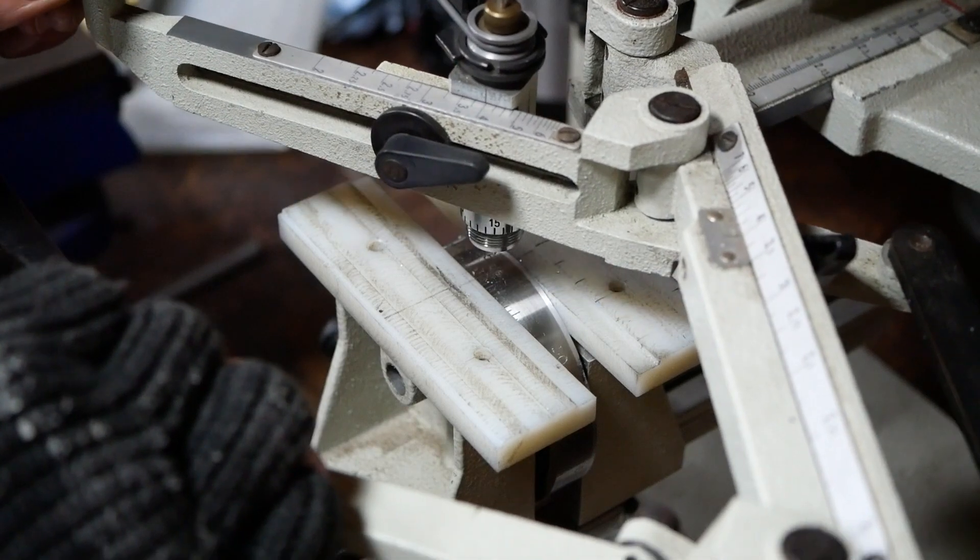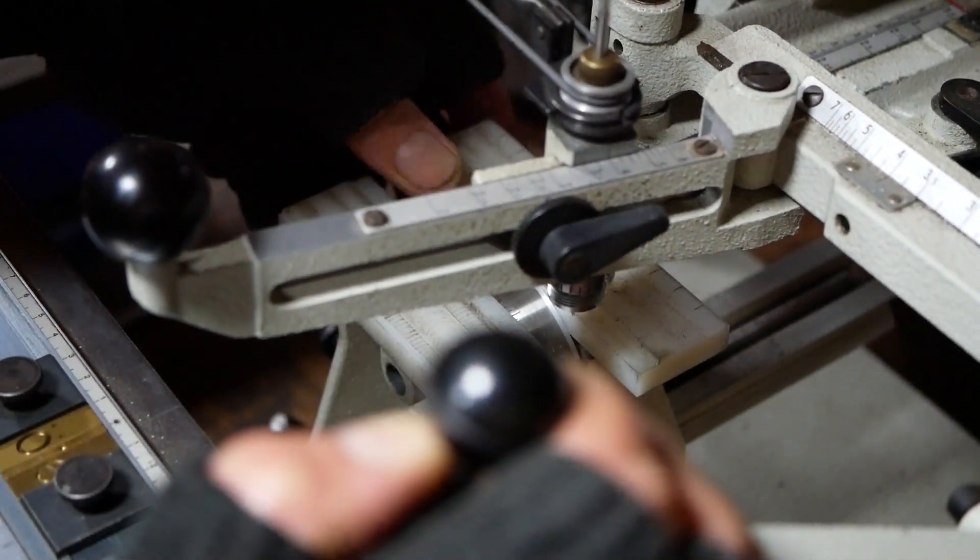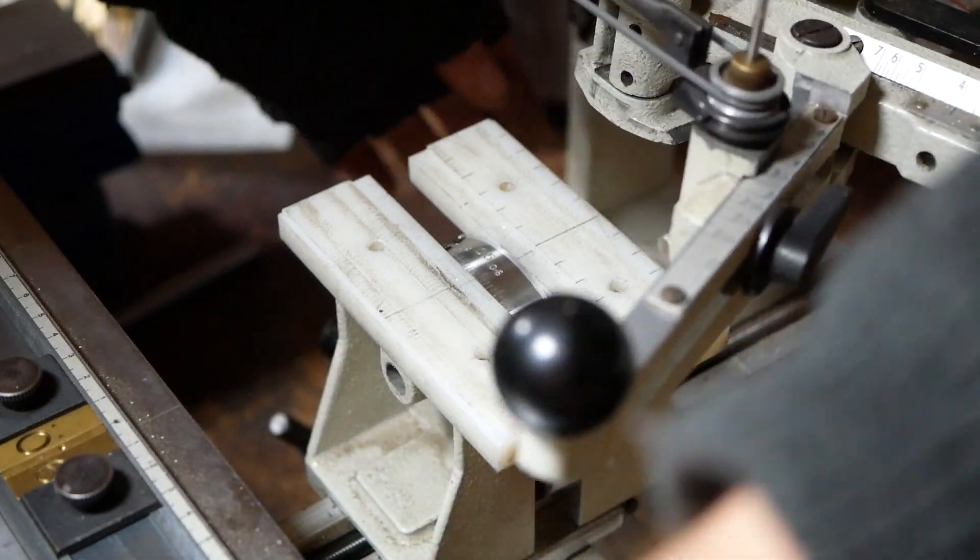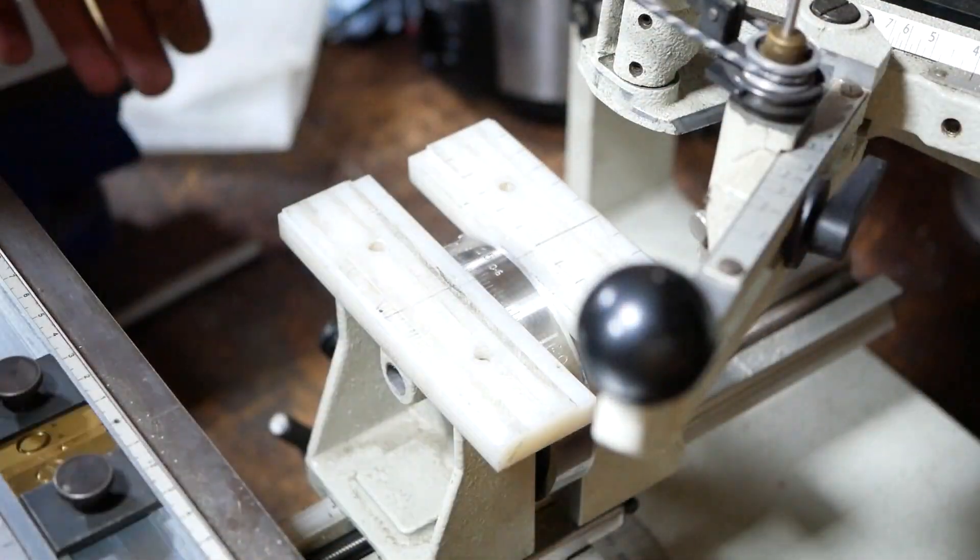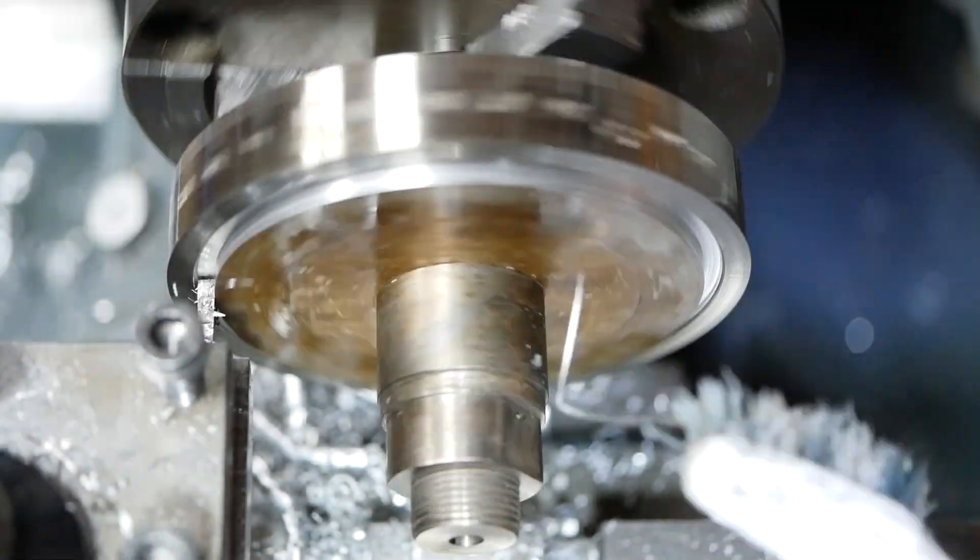To remove the ring, we use the trepanning process we demonstrated at the start of the video. Heat doesn't work here due to the larger thermal expansion coefficient of the aluminium relative to the stainless steel.